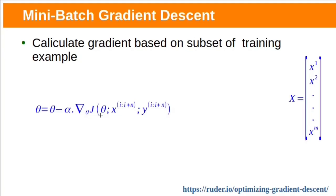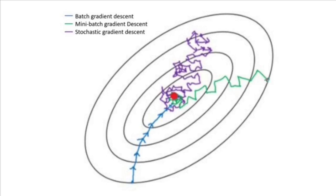Another variant — mini-batch gradient descent — overcomes the problems of stochastic gradient descent. Mini-batch gradient descent uses a batch of training examples to calculate the gradient, instead of a single training example or the entire dataset. This mini-batch uses a subset of the entire dataset for a single parameter update, and the same-size subset is used for the next update — for example, first 1 to 100 training examples, then 101 to 200, then 201 to 300, and so on. This is the formula for mini-batch gradient descent weight updation, where n is the batch size. Mini-batch gradient descent takes relatively large but somewhat noisy steps towards the minimum compared to stochastic gradient descent, and smaller but noisier steps compared to full batch gradient descent, which takes larger and very less noisy steps.